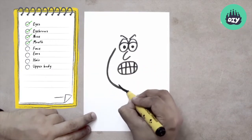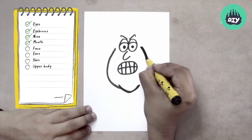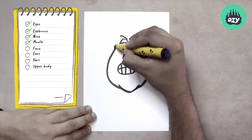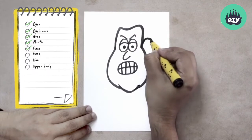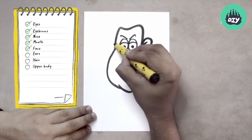Then we complete the circumference of the face, the lower part and the upper part. We make ears, hairstyle.